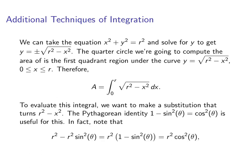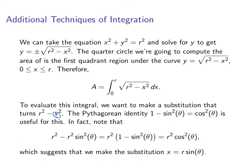Now if we note that r squared minus r squared sine squared theta is equal to r squared times 1 minus sine squared theta — just by factoring out the r squared — that's equal to r squared cosine squared theta. So because of that, this actually suggests a substitution: if we can take the x in our integral and replace it with r sine theta, then we get this expression, which turns very nicely into r squared cosine squared theta.